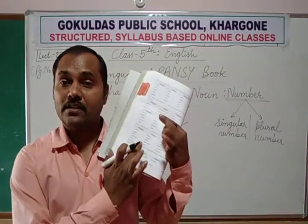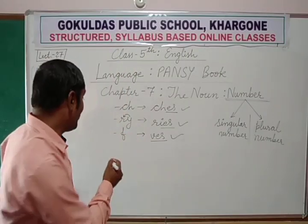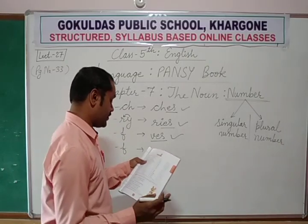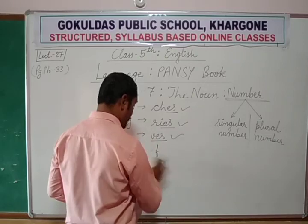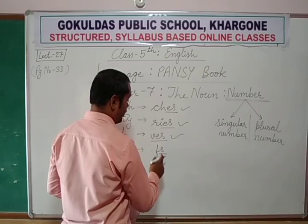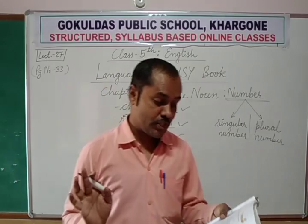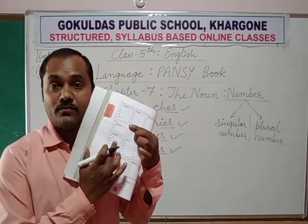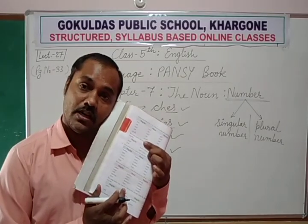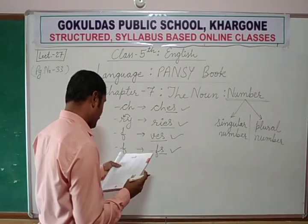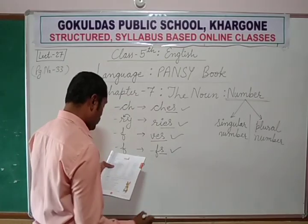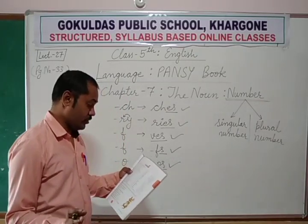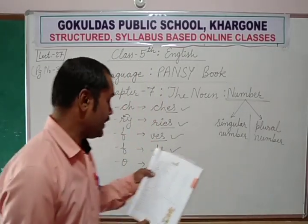However, some words end with F but don't follow this rule. Just like 'chief' or 'handkerchief' — here we don't remove F; we simply add S: 'handkerchiefs'. Then 'rhino' — although it ends with O, we only add S: 'rhinos'. But for 'tornado', we follow the 'oes' rule: 'tornadoes'.